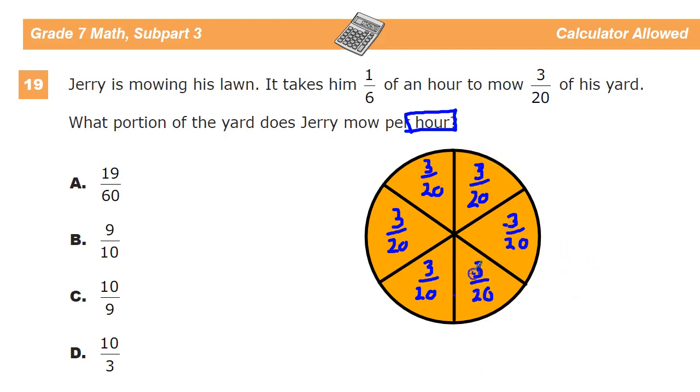So one, two, three, four, five, six of them. So that would be three, six, nine, twelve, fifteen, eighteen. Eighteen-twentieths. And that reduces, of course, because two goes into eighteen nine times, and two goes into twenty ten times.